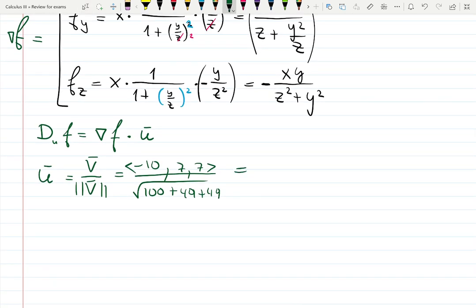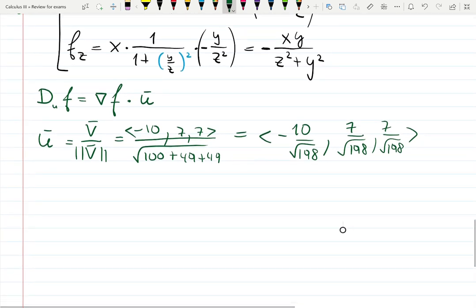We can distribute it now under each variable, each component. Yes, minus 10 over square root of 198, 7 over square root of 198, and 7 over square root of 198. This is my unit vector.